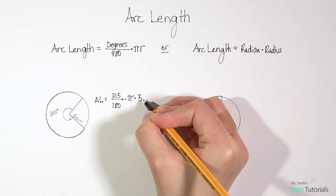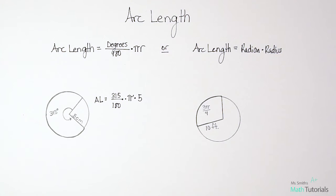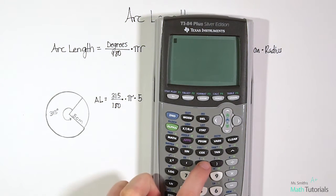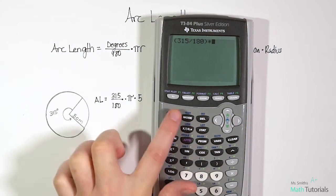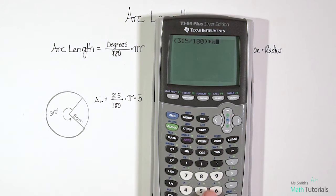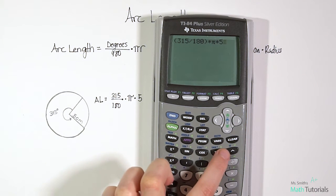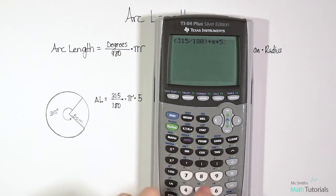Now we can just put that straight in the calculator. So you'd want to bring your calculator out. Parenthesis 315 divided by 180, so we're showing the calculator that's a fraction, times pi times 5. And that pi button is right above the exponent button in blue, so second and then that pi button.